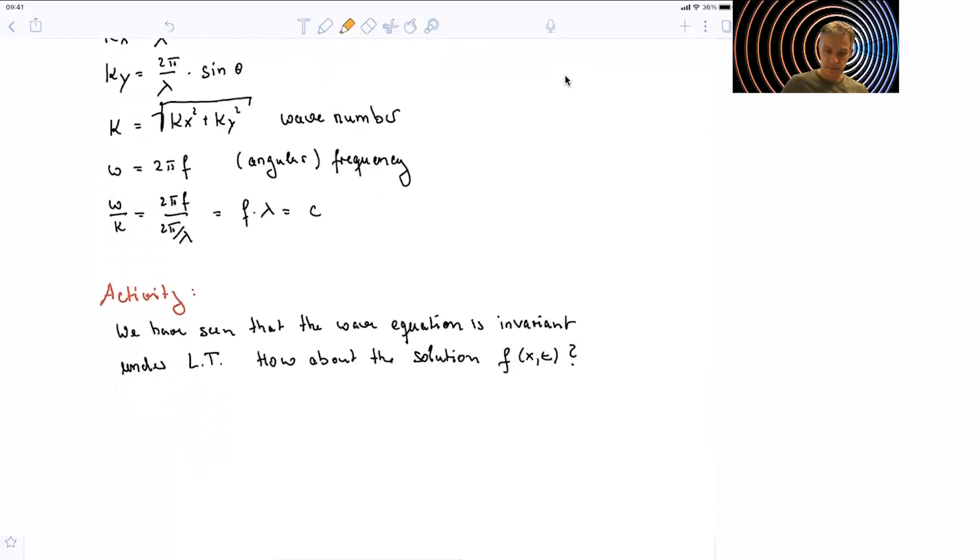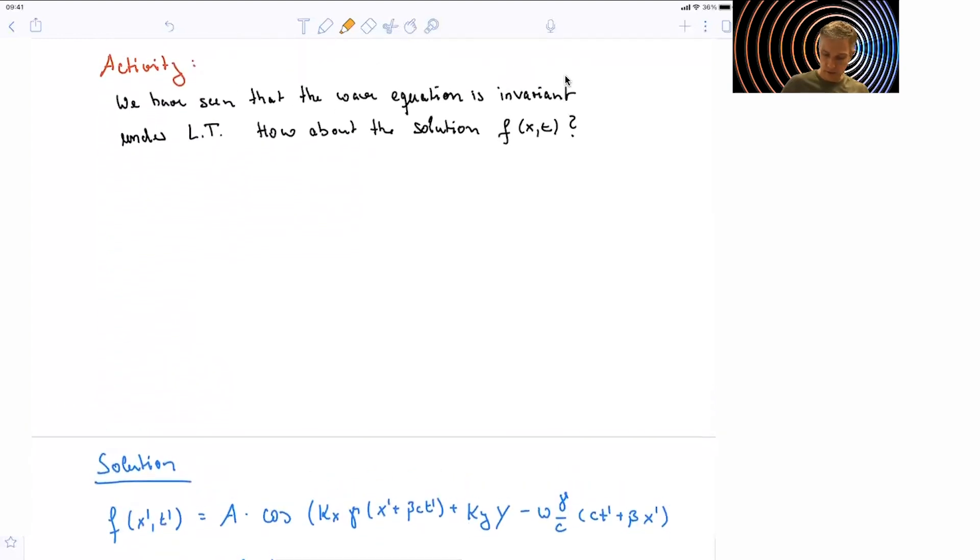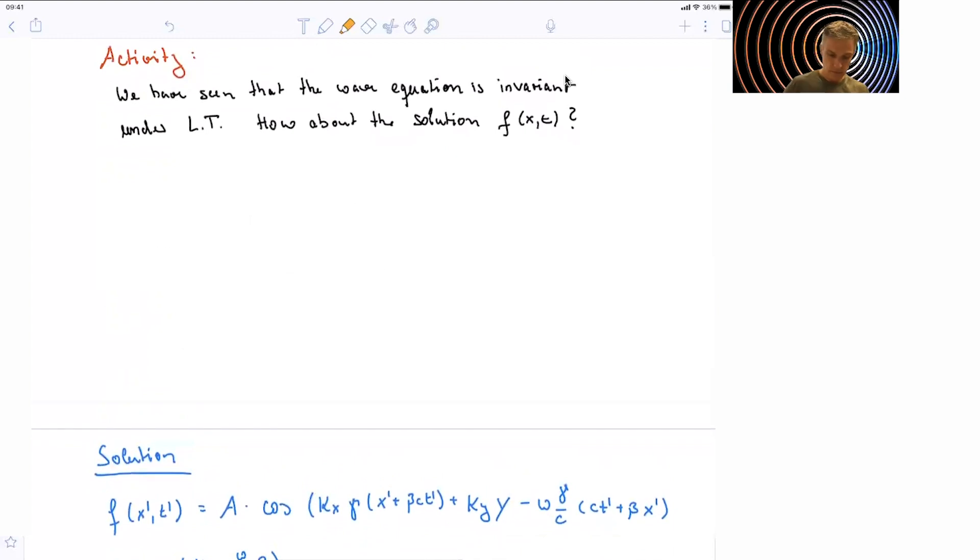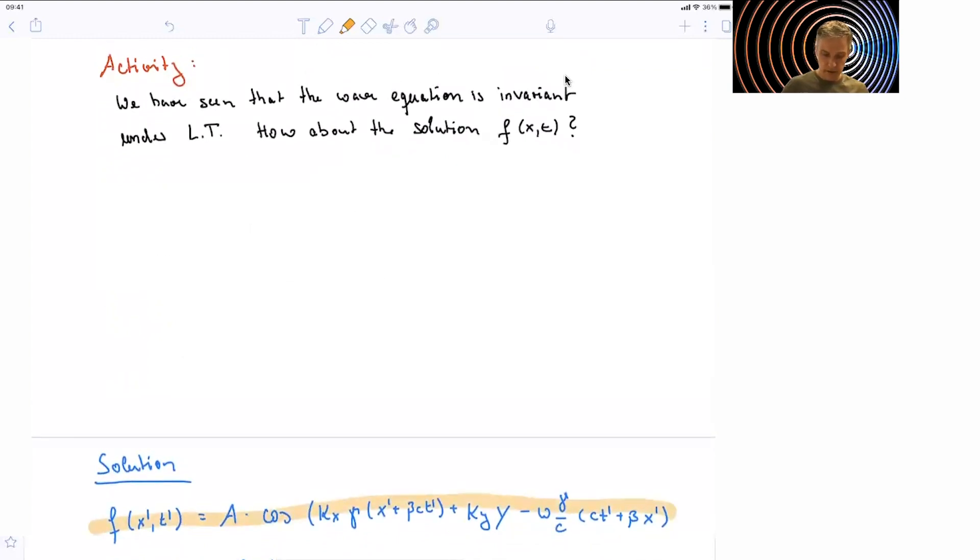So we have to investigate this specific solution and Lorentz transform x and t. And I'll just do this here in this equation. So you see that now we have, as part of the cosine,